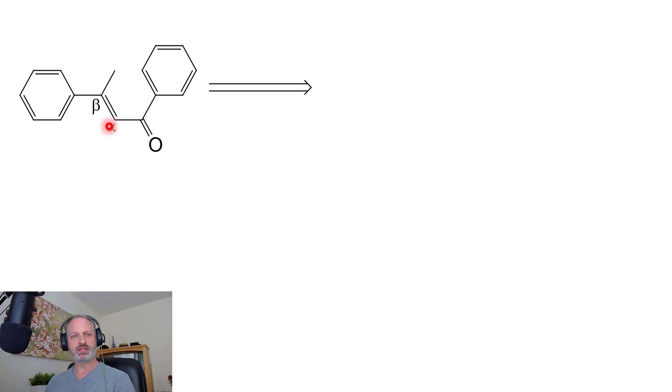If we look closely, we can see our alpha position and our beta position has a double bond, so it's unsaturated and we're next to a ketone. So it's an alpha beta unsaturated ketone.